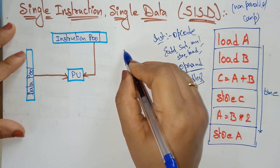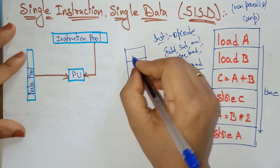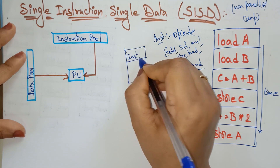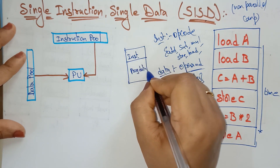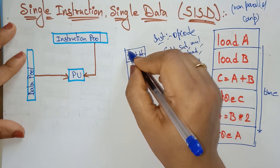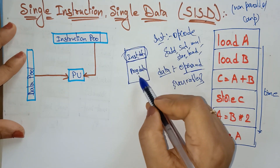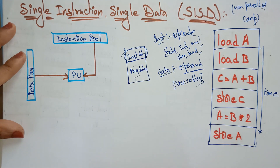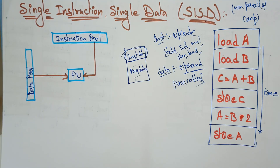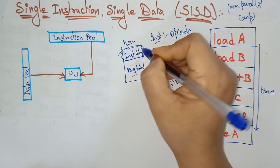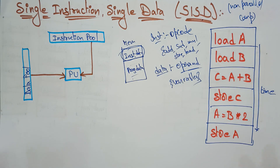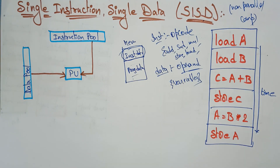Memory is divided into two parts: one holds the instruction and another holds the program data. The program data and instruction data are stored there. All the opcodes relating to the instructions are stored in memory. So memory is divided into two parts: program and instruction.